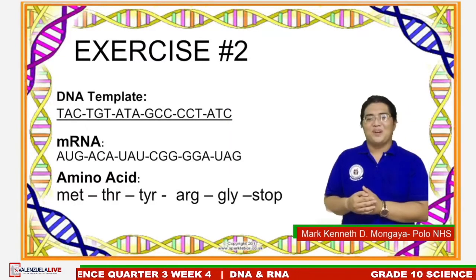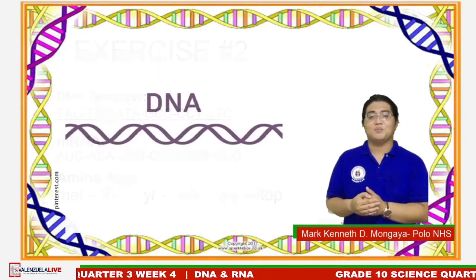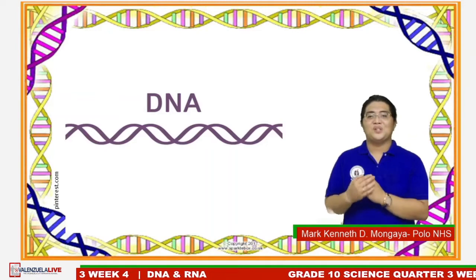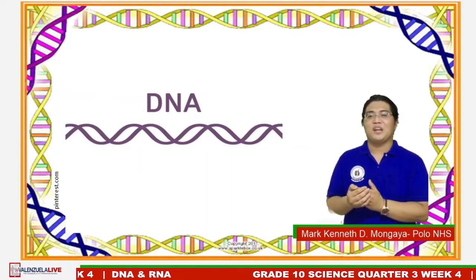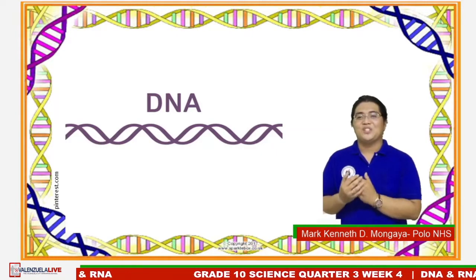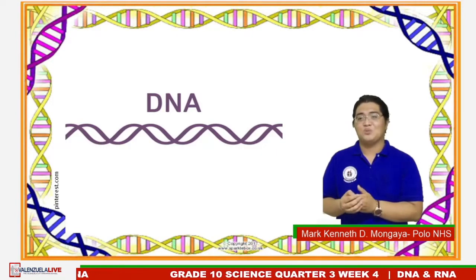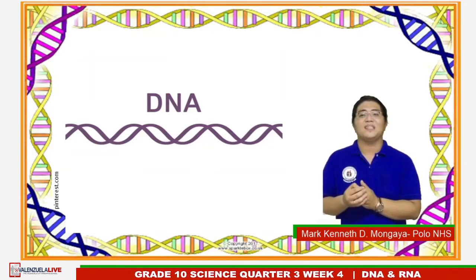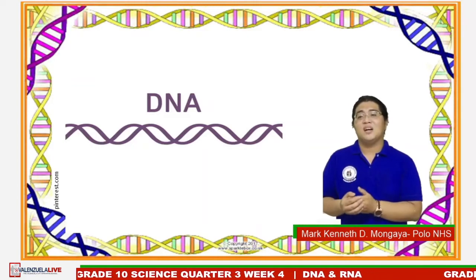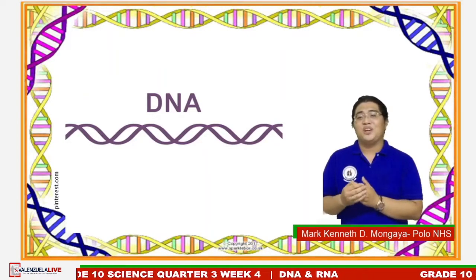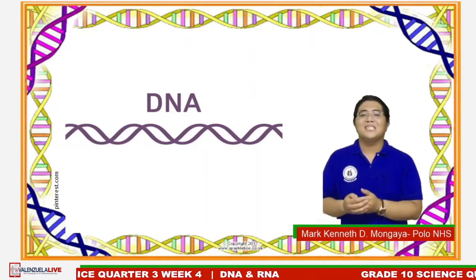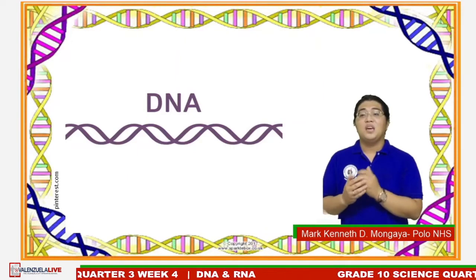To wrap up our learning session for today: protein synthesis is the process of making proteins. It has two processes — transcription and translation. Transcription happens in the nucleus where the mRNA copies the DNA code. Translation happens in the ribosome where the code from the mRNA is translated into protein by tRNA and ribosome. Once translation is done, the protein will fold in unique ways based on how it will be used by the body. This whole process happens every time, even when you are sleeping.